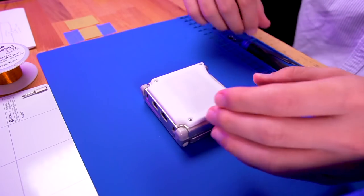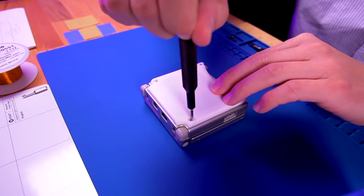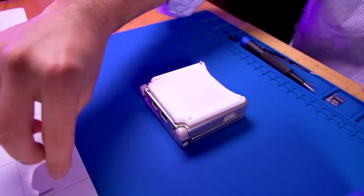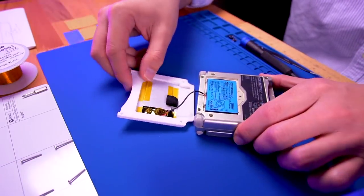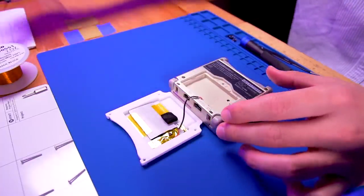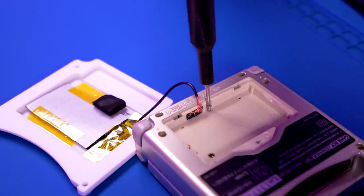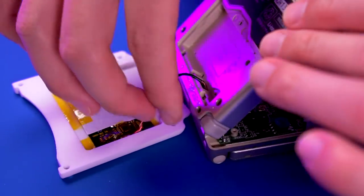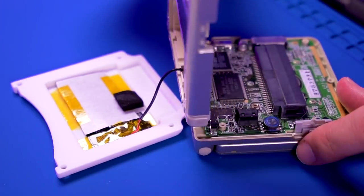To get started, remove the four Phillips screws securing the expansion cover. Then remove the battery and the tri-point screw below it as well as the one by the cartridge slot. And carefully maneuver the rear SP shell out of the way to expose the motherboard.